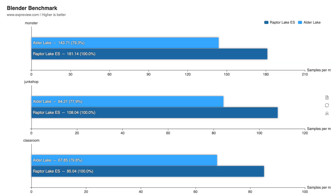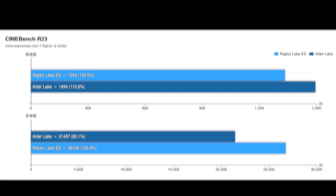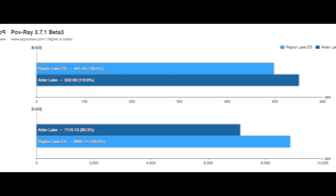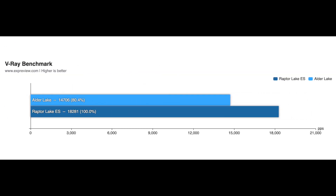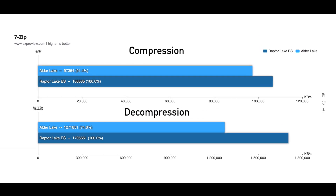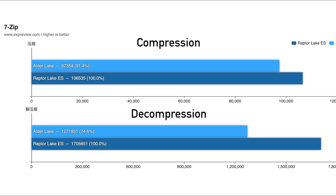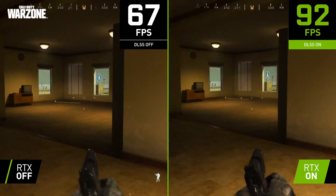The i9-13900 is 26% better than the 12900K in Blender, and scored 25% higher in Cinebench R23 multicore. In the Corona benchmark the 13900 scored 30% higher, though it lost by 10% in POV Ray. It regained the lead in V-Ray by 24%, and 7-zip compression is 9% faster on the 13900 while decompression is a massive 34% faster. Overall, the i9-13900 leads the 12900K by an average of 20% in productivity benchmarks.